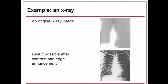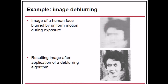An original X-ray image can be significantly improved using contrast and edge enhancement techniques — these are two fundamental image processing techniques. Image de-blurring is another technique: a human face blurred by uniform motion during camera exposure can be restored by applying a de-blurring algorithm.